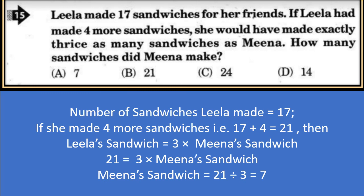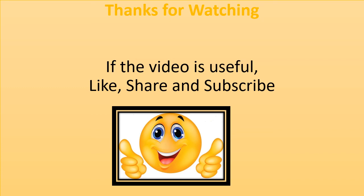Leela made 17 sandwiches for her friends. If Leela had made 4 more sandwiches, she would have made exactly thrice as many sandwiches as Mina. How many sandwiches did Mina make? Number of sandwiches Leela made = 17. With 4 more: 17 + 4 = 21. So 21 = 3 × Mina's sandwiches, meaning Mina made 21 ÷ 3 = 7 sandwiches. Thanks for watching — write in the comments what type of video you want to see.